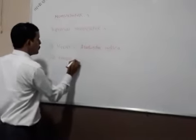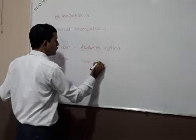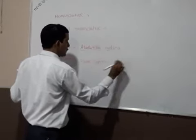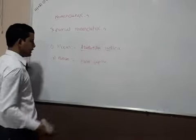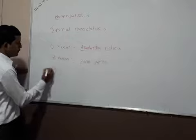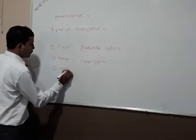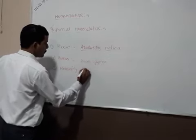For example, human beings are called Homo sapiens. The housefly is called Musca domestica.